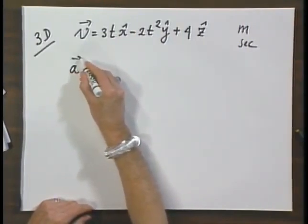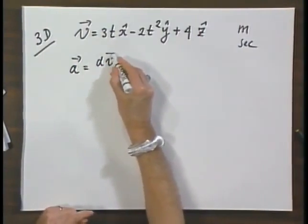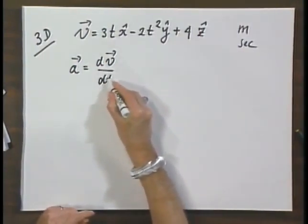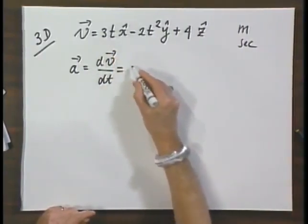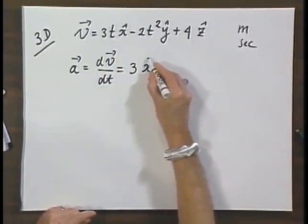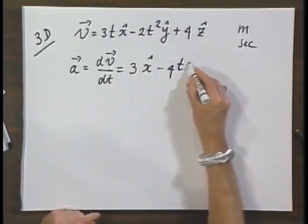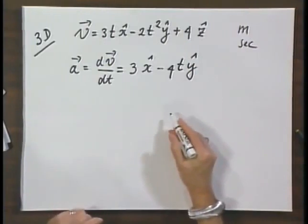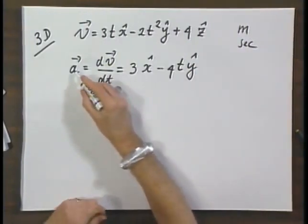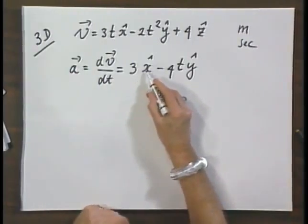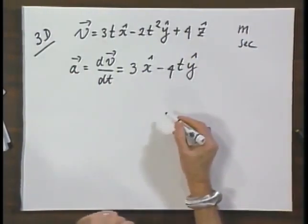The instantaneous value for A equals dv dt and that now equals 3x hat minus 4t y hat. So the acceleration has a component in the x direction and has a component in the y direction and has no component in the z direction.